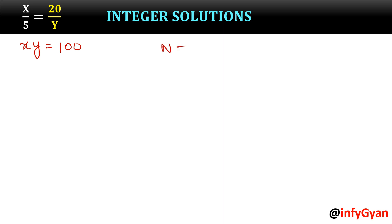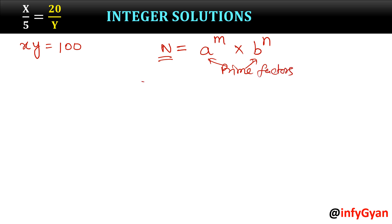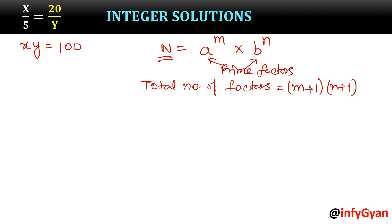For any general number n, if we can factorize it in terms of prime factorization, we write n in terms of its prime factors — a and b are prime factors. Then the total number of factors would be (m+1) times (n+1), where m is the exponent of prime number a and n is the exponent of prime number b.